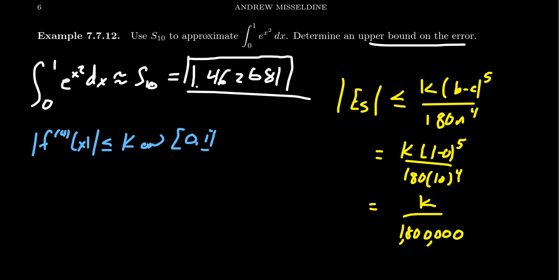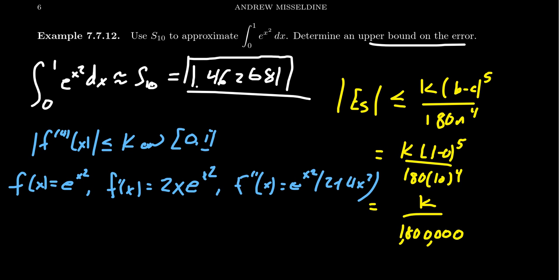If we take f as our function e to the x squared, we've done some of these calculations in a previous video. The first derivative was 2x e to the x squared. The second derivative was e to the x squared times 2 plus 4x squared, if I remember that correctly. If we continue on with that, I'm not going to go through necessarily all the details. Well, okay, we can do some details. You twisted my arm there.